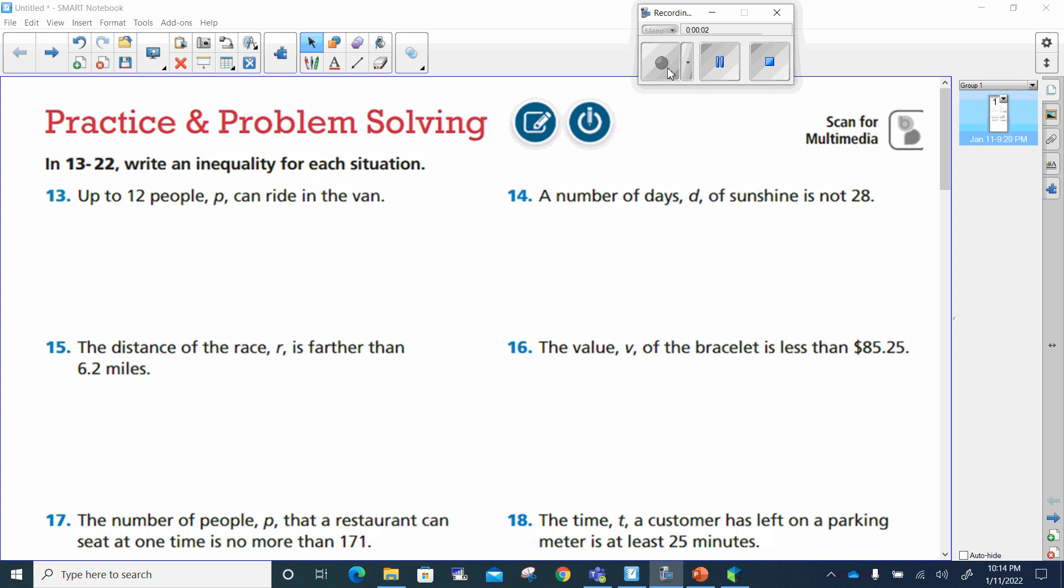Let's go ahead and knock out this homework. I got the odd list tonight, so I'll start with number 13. Up to 12 people p can ride in the van, so we know the number 12 is involved. There can't be more than 12 people in that van, so the number has to be smaller than or equal to 12. Since p is the variable, this would be p is less than or equal to 12.